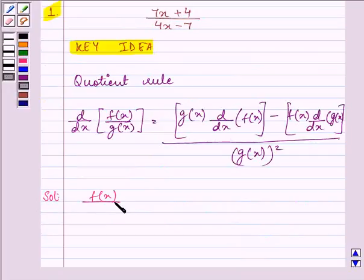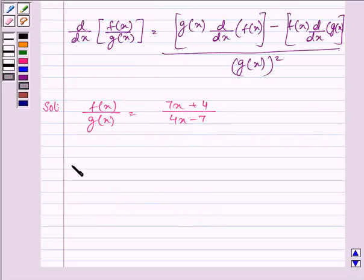Here, fx over gx, the function that is given to us as 7x plus 4 divided by 4x minus 7. Now we need to find the derivative of this expression.